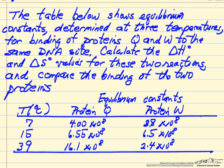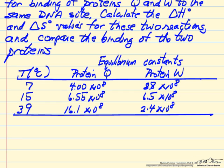This is a problem to do some equilibrium calculations on a biological system. In the table we're given equilibrium constants for a couple proteins at different temperatures, and these are binding to the same DNA site. We want to compare these by calculating the delta H for the reaction of binding and the delta S.